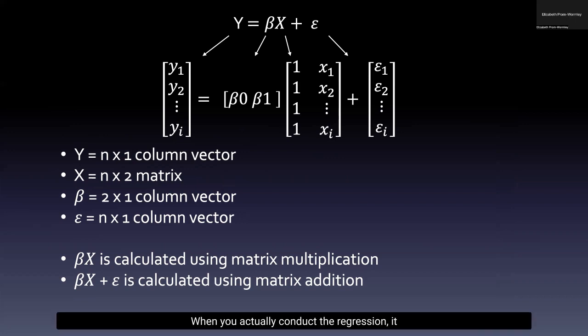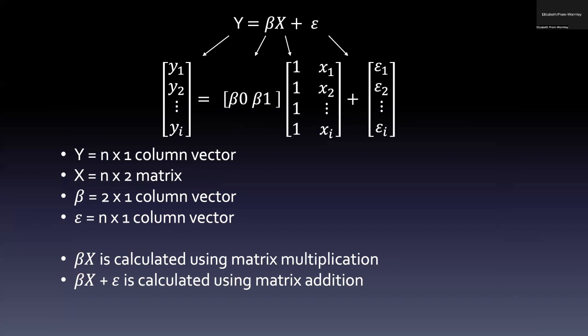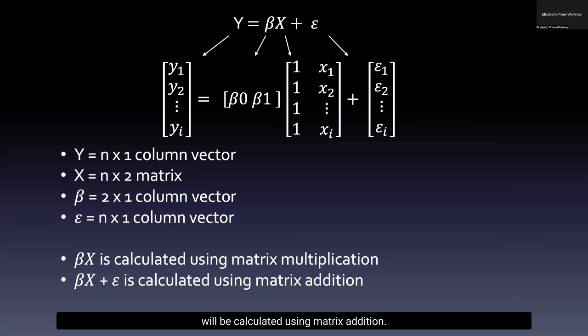When you actually conduct the regression, it would be conducted in the following ways. First, the term beta x will be calculated using matrix multiplication. And then the addition across the entire model of beta x plus epsilon will be calculated using matrix addition. So what we can see here is that we already have and we have already been working extensively with matrices, even in linear regression.